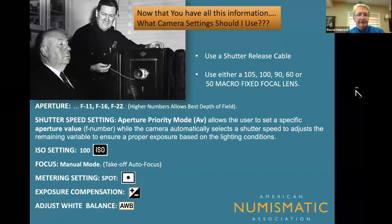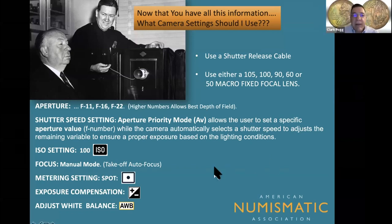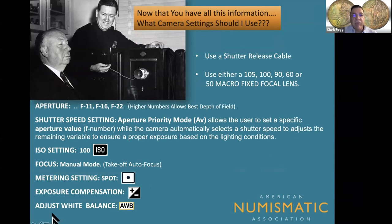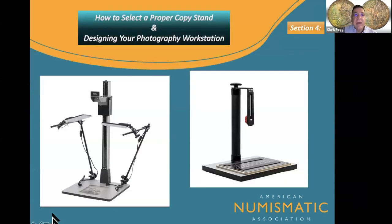Set the aperture to f11, f16, or f22; set the shutter speed to aperture priority values; adjust the ISO settings and meter settings. That's just a checklist for you. How to select a proper copy stand is really important — this is something a lot of people just don't want to spend money on, but it comes in very handy when taking macro coin photography.